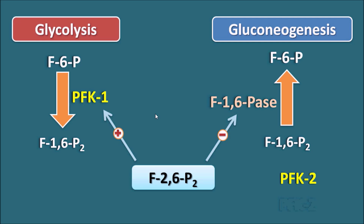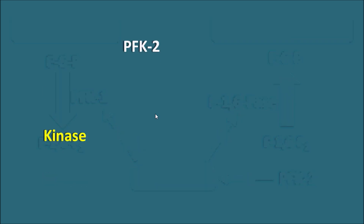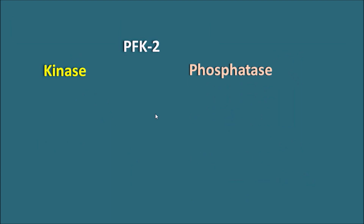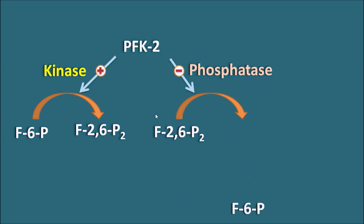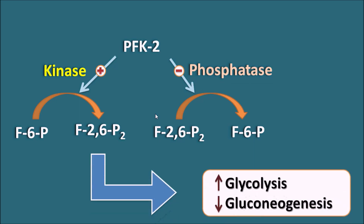PFK2, phosphofructokinase 2, is responsible for the generation of fructose 2,6-bisphosphate, which affects glycolysis and gluconeogenesis. PFK2 has two activities: kinase activity and phosphatase activity. When PFK2 is active, its kinase activity converts fructose 6-phosphate to fructose 2,6-bisphosphate, while its phosphatase activity converts fructose 2,6-bisphosphate back to fructose 6-phosphate. Normally, PFK2 inhibits its phosphatase activity, mainly converting fructose 6-phosphate to fructose 2,6-bisphosphate, resulting in increased glycolysis and decreased gluconeogenesis.